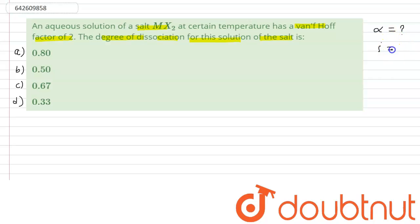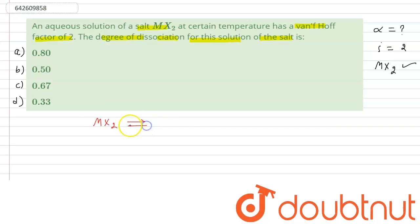We have given the salt of MX₂ type, and the van't Hoff factor i equals 2. When MX₂ dissociates, it gives M²⁺ ions and 2 moles of X⁻ ions.